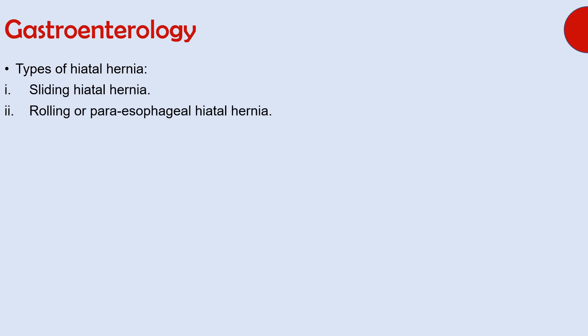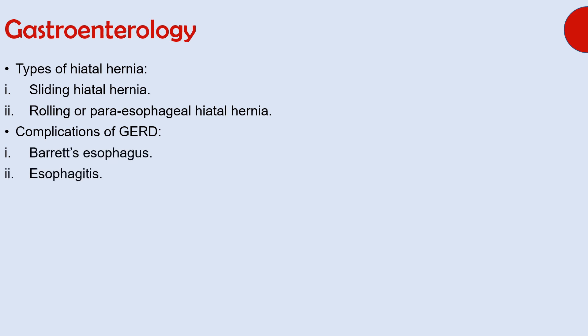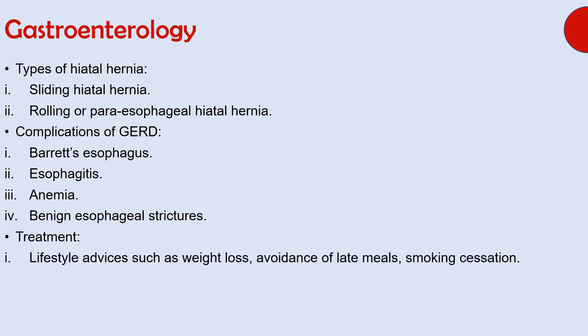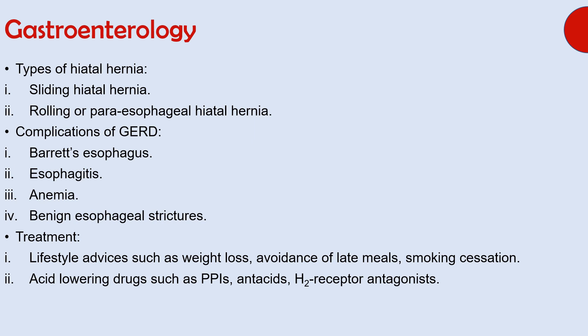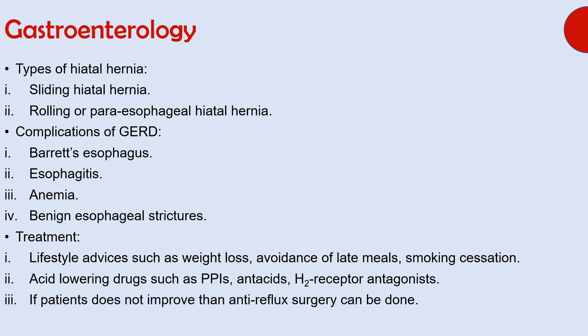Types of hiatal hernia include sliding hiatal hernia and rolling or paraesophageal hiatal hernia. Complications of GERD include Barrett's esophagus, esophagitis, anemia, and benign esophageal strictures. Treatment begins with lifestyle advice such as weight loss, avoidance of late meals, and smoking cessation. Acid-lowering drugs such as proton pump inhibitors, antacids, and H2 receptor antagonists are used if lifestyle changes fail, with proton pump inhibitors as the mainstay. If symptoms do not improve, anti-reflux surgery is performed.